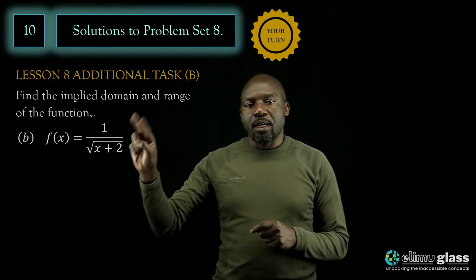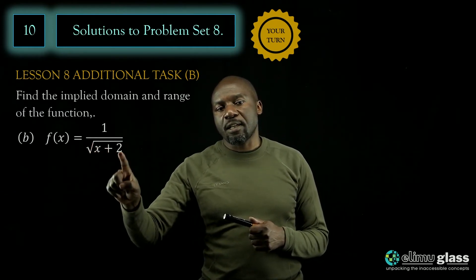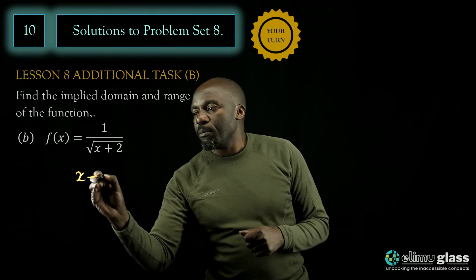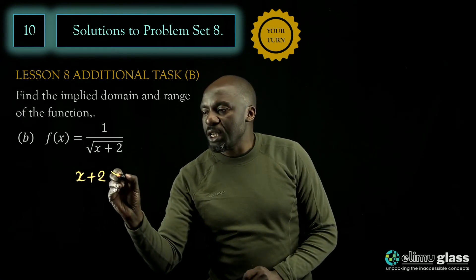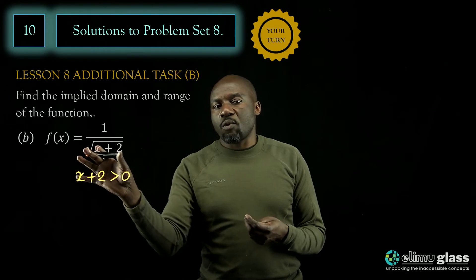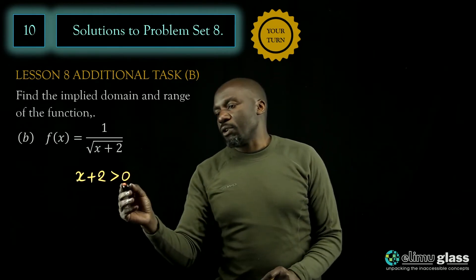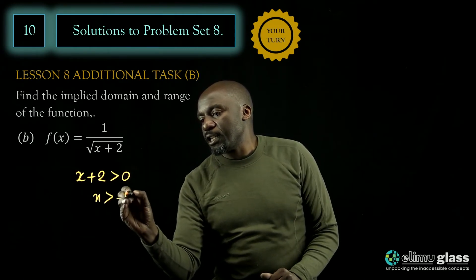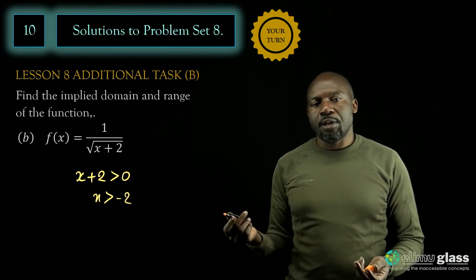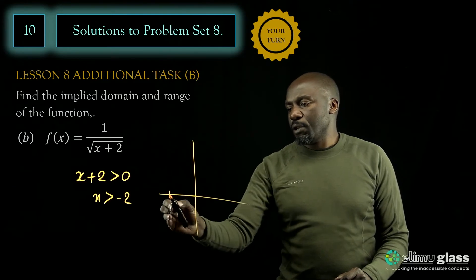The second combined function: 1/√(x + 2). We must take care of both requirements. Because the square root is in the denominator, the argument x + 2 must be strictly greater than zero — not greater than or equal to, because the reciprocal function does not allow zero in the denominator. So x + 2 > 0, which means x > -2. That is our domain.